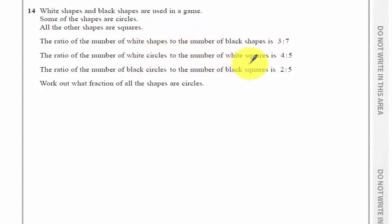And then there are white circles and white squares in the ratio of four to five and black circles and black squares in the ratio of two to five. And we need to work out the fraction of all the shapes that are circles.